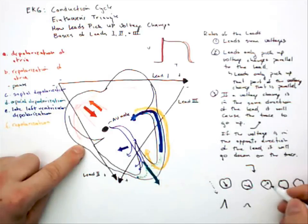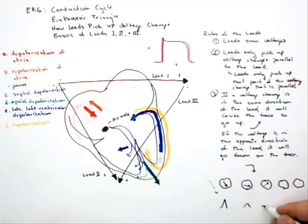If the voltage change was perpendicular to this lead, it would cause what's called an isoelectric change. Now, my voltage change is going in the opposite direction of my lead, so this would cause the lead to go down. And if the voltage change was directly opposite of our lead, it would cause a large negative deflection.